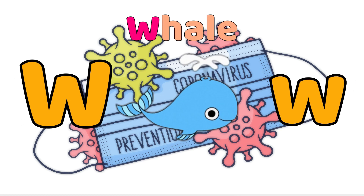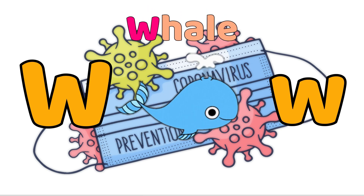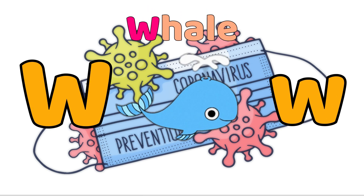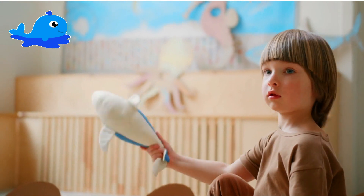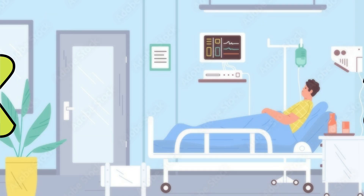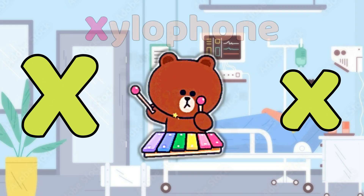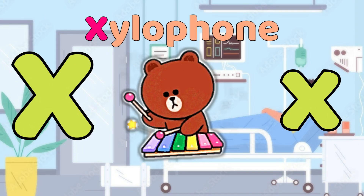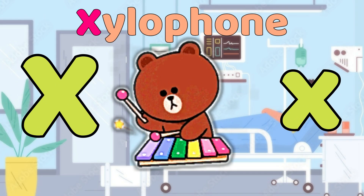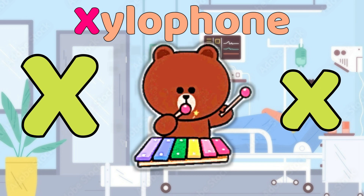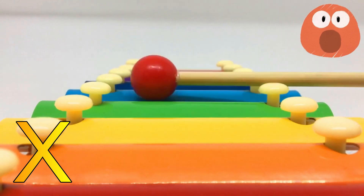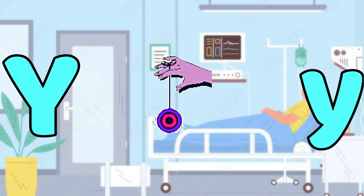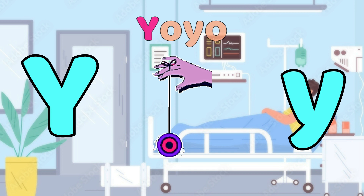V is for Violin. V-Violin, Violin. W is for Whale. W, Whale. W, Whale. W, Whale. X is for Xylophone. Z, Z, Xylophone. X, Xylophone.